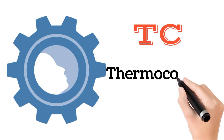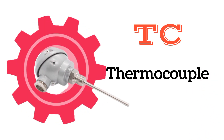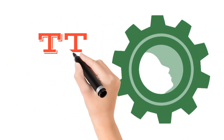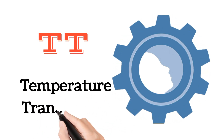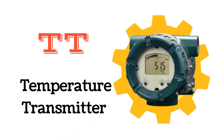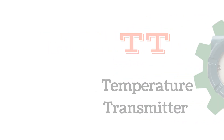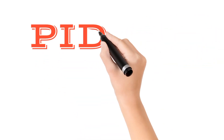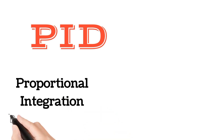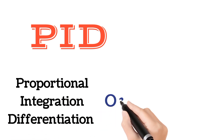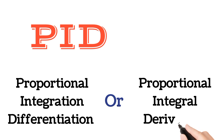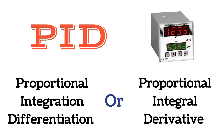RTD means resistance temperature detector. TC means thermocouple. RTD and thermocouple are both temperature sensors. TT means temperature transmitter.